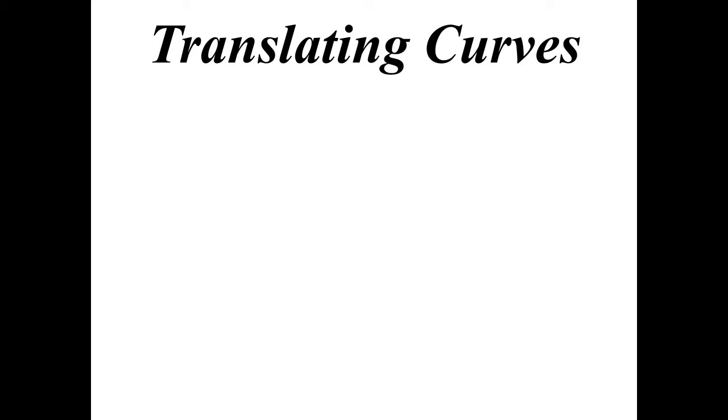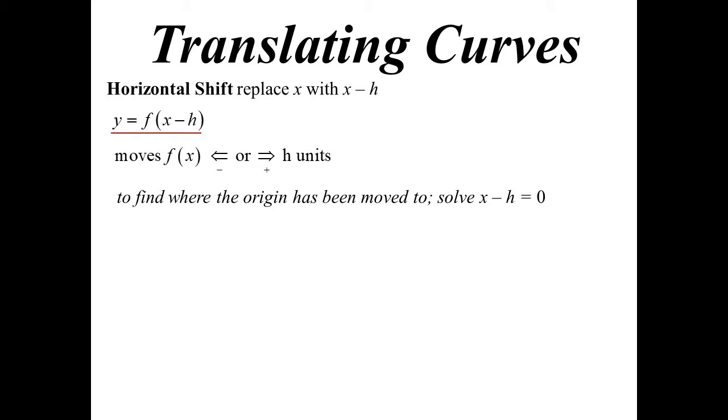So let's have a look at translation. You'll recall horizontal shift, that's where we replace x with x minus h. So we see it's y equals function x minus h, and that'll move it left or right h units. If you're unsure which way to move it, then just solve x minus h equals zero, and that'll tell you where the origin has been moved to.